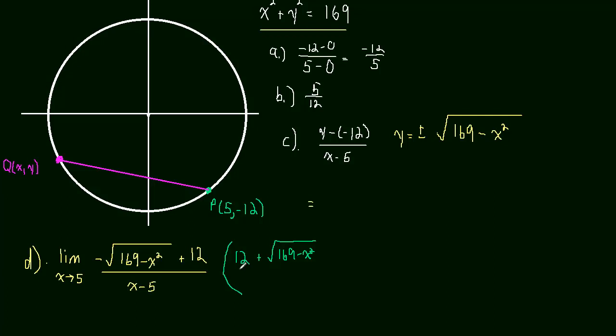And then this is going to be 12 plus, same thing, the square root of 169 minus x squared. Okay. Let me give myself some room. So we'll come back to this picture and see what's really going on.